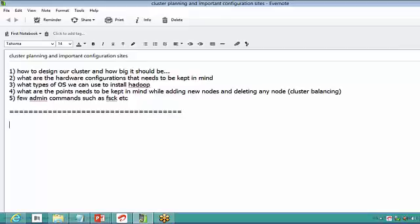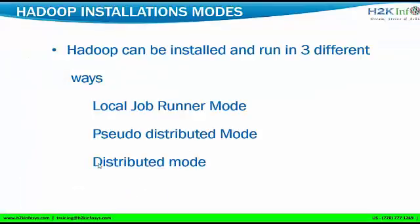Once you get to know about these configuration files, tomorrow we can discuss the actual installation process. Hadoop can be installed and run in three different ways. There are different ways to install Hadoop because it can be used for a single machine or a number of machines as well. The first one is local job runner mode, the second one is pseudo distributed mode, and the last one — which is used in most companies — is distributed mode. That is where the beauty of Hadoop comes in. Distribution is the main important thing.